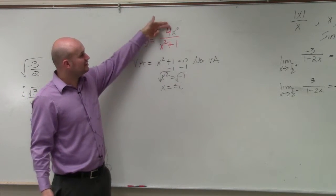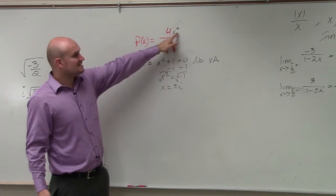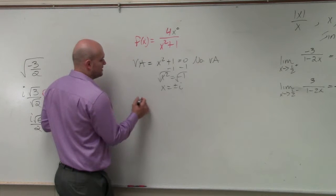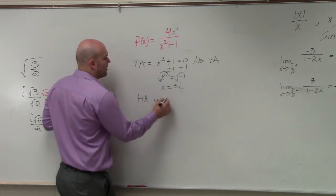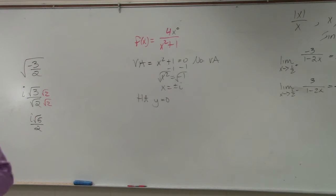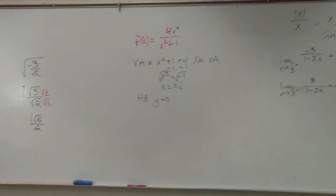But remember, we're comparing the degree in the numerator to the degree in the denominator. Since the degree in the numerator is greater than the degree in the denominator, we know that the horizontal asymptote is y equals 0. That was in your notes last class period, so you don't really need to do math, you just need to know the horizontal asymptote test.